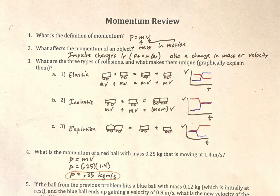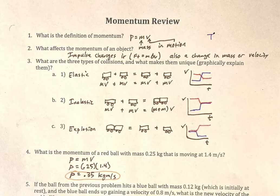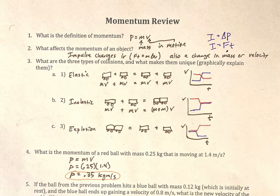The thing that affects the momentum of objects is impulse — impulse is the thing that actually changes it. If we look at the formula, it's either mass or velocity. But impulse is also a force times a time, so really a force or a period of time could also change our momentum as well.